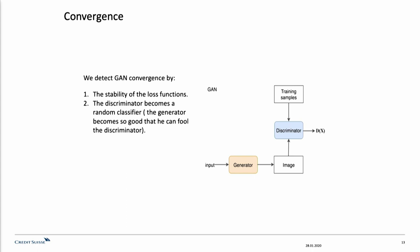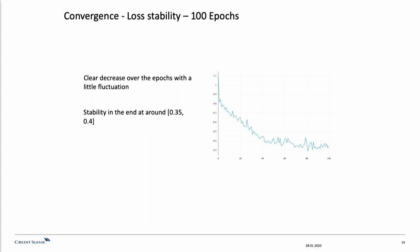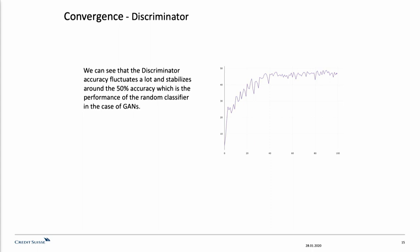This is our convergence loss after 100 epochs. We see a clear decrease over the epochs with a little fluctuation. And this is our discriminator after 100 epochs. We can see that it basically becomes a random classifier.